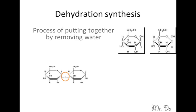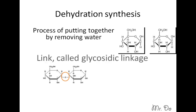Dehydration synthesis. It's a process of putting together by removing water. So the picture on the right, we have two glucose, and when you remove them, it leads to the picture on the left. Water was removed and they were put together. That link in the middle is called a glycosidic linkage.